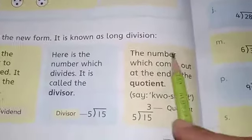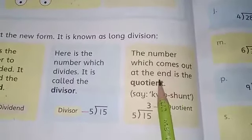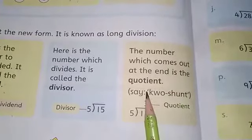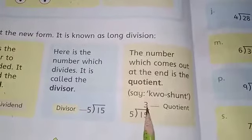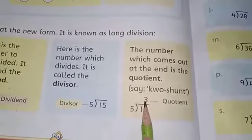The number which comes out at the end is the quotient. The number that you get at the end is called the quotient.